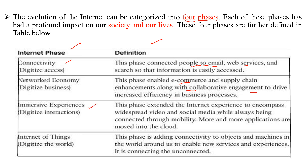Phase 3 — immersive experiences — digitized interactions. This phase extended the internet experience to encompass widespread video and social media while always being connected through mobility, with more and more applications moved into the cloud. Phase 4 — internet of things — digitize the world. This phase adds connectivity to objects and machines in the world around us to enable new services and experiences. It is connecting the unconnected. These three slides' contents can be written for a total of eight marks.